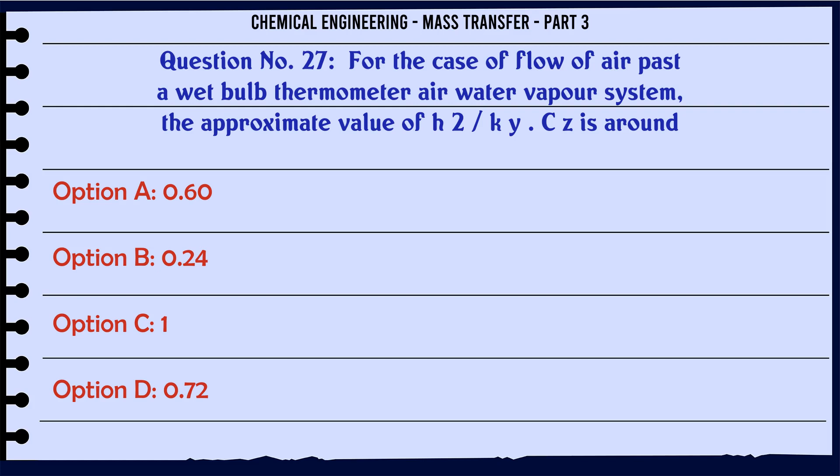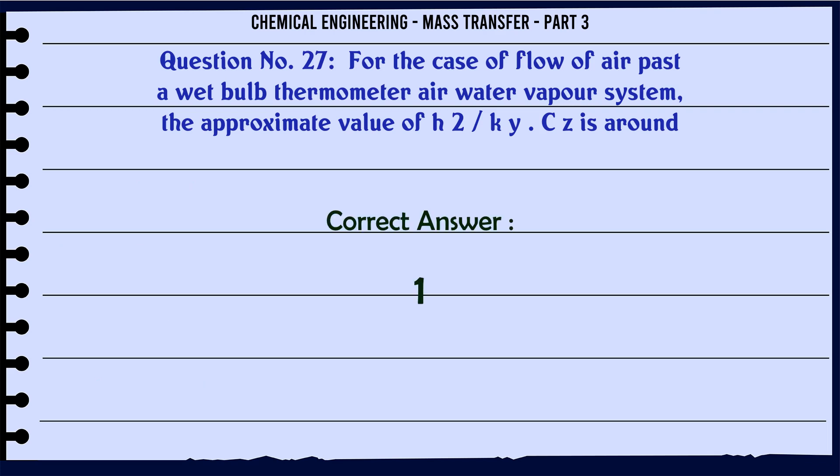For the case of flow of air past a wet bulb thermometer (air-water vapor system), the approximate value of H/Ky (C_s) is around: A) 0.60, B) 0.24, C) 1, D) 0.72. The correct answer is: 1.